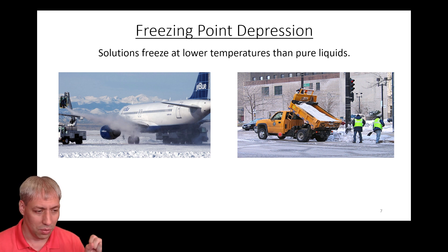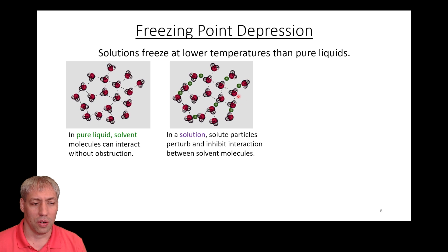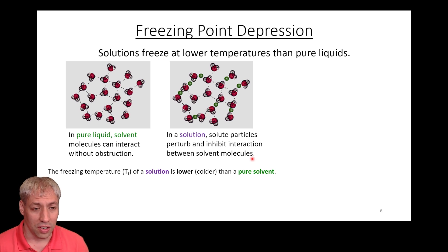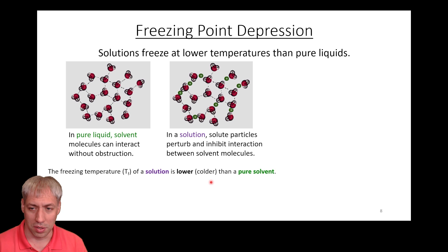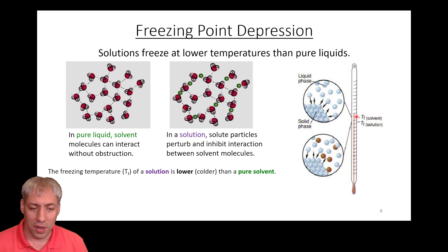You're using the addition of something to water — on the street or on an airplane wing — to lower the temperature of freezing. Basically, if you have a pure solvent, the molecules can interact without obstruction. When you add solute molecules, you start to interfere with that crystallization or solidification — you inhibit it from making a crystal, blocking that solid formation. So the freezing temperature of a solution is lower; you have to cool it down more than for a pure solvent. If you look at a thermometer, a pure substance will freeze at a certain temperature, but adding solute molecules lowers that temperature.